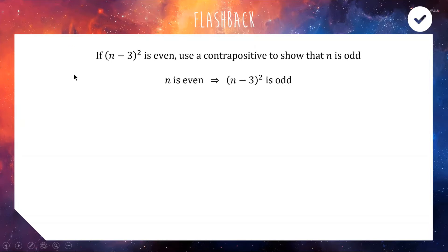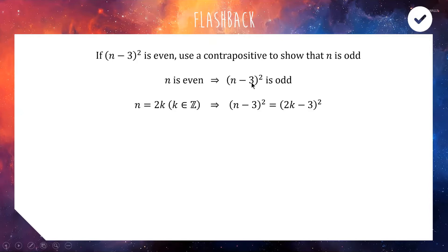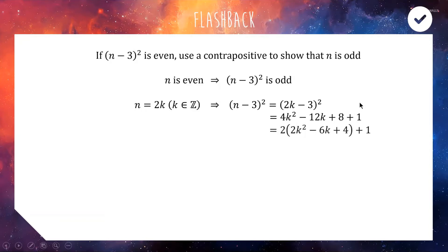Here is the contrapositive statement. We'll write n as an even number — a multiple of 2, so n = 2k. Then we sub that into (n−3)² giving us (2k−3)². Using a perfect square expansion we get 4k² − 12k + 9. We can write the +9 as +8+1, then factor a 2 out of the first three terms, giving us (n−3)² = 2(2k²−6k+4) + 1, which is 2 times a number plus 1 — the definition of an odd number.